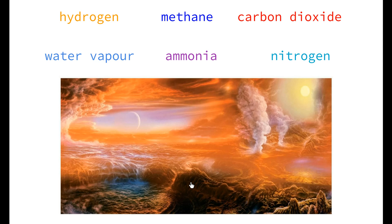This image shows an artist's representation of what early Earth may have looked like — quite red with a dense atmosphere, no life, and movement of water. The gases expelled from volcanoes that formed the early atmosphere would have included hydrogen gas, methane gas, carbon dioxide, water vapor, ammonia, and nitrogen.